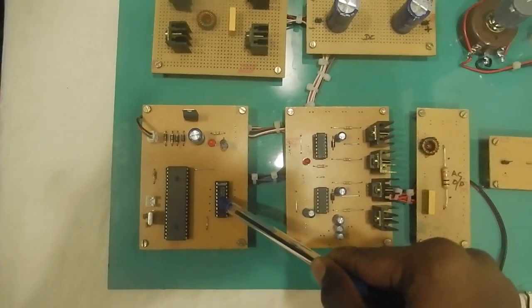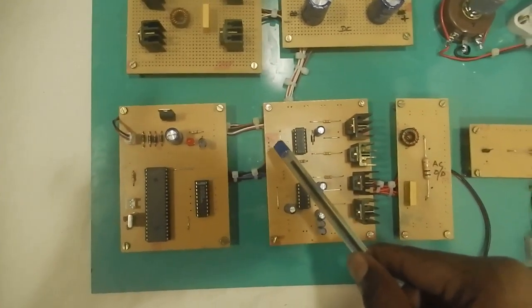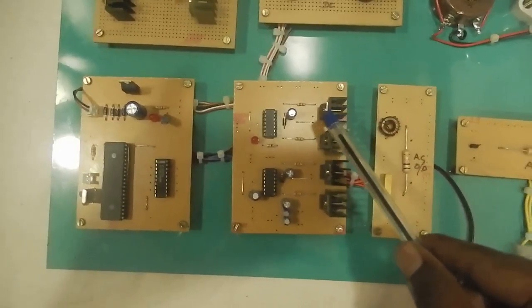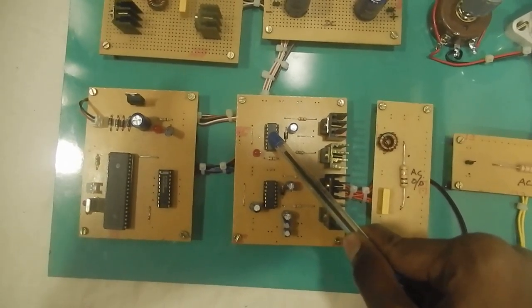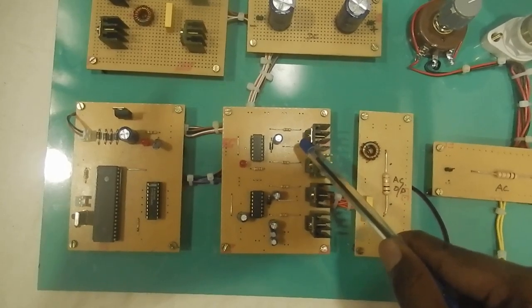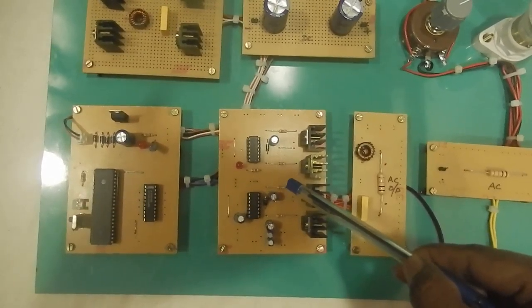This is the circuit which increases the current gain of the PIC, and this is the gate driver circuit FAN7392N, through which we are giving the gate signals to the 8 MOSFET switches in the inverter.